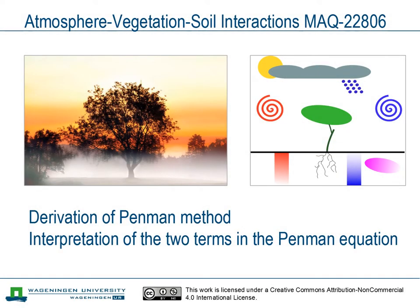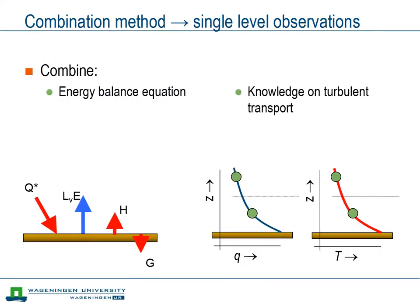The Penman equation forms the basis for many combination methods to estimate evapotranspiration. In this clip we will guide you through the derivation of the Penman equation. Following those steps will also help us to properly interpret the different parts of the equation. The idea of combination methods is that they provide information about the surface fluxes of sensible and latent heat flux by combining the concept of the surface energy balance with what we have learned about turbulent transport.